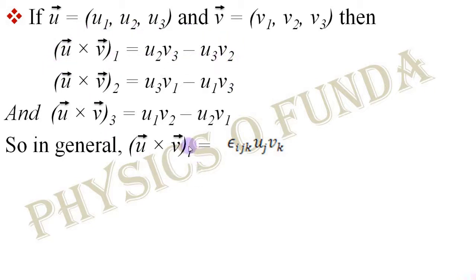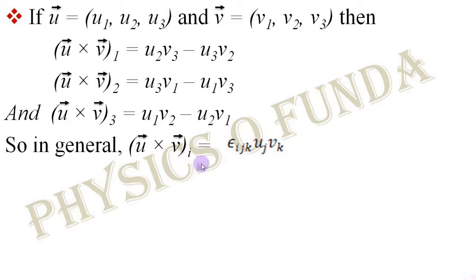Likewise, putting i = 2 and doing the same arithmetic gives the second component, and putting i = 3 gives the third component. So this is an application of the completely or fully anti-symmetric tensor in physics.